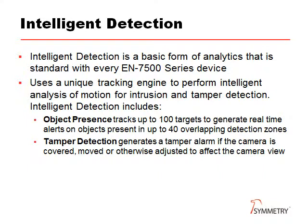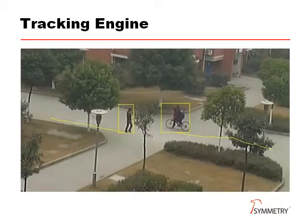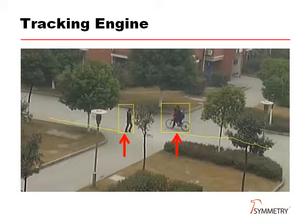Intelligent detection is a basic form of analytics which tracks up to 100 simultaneous targets and up to 40 detection zones, and is supplied as standard with every camera in the range. Object presence simply means that any of the targets inside any of the detection zones will generate an alert. Camera tamper detection is also provided as standard. In this screen, the yellow box shows the boundary of the target and the trail shows the movement. An alert is generated if the point where the trail meets the boundary box is inside a detection zone.